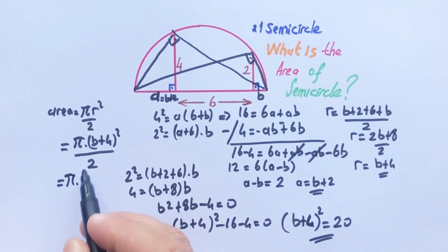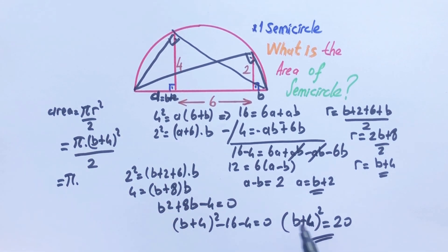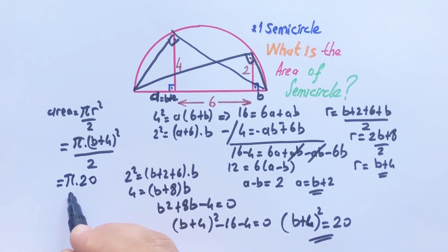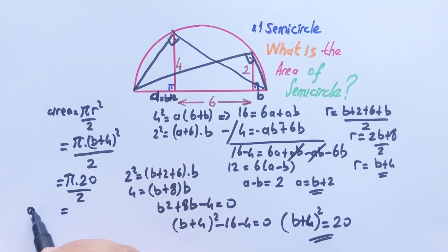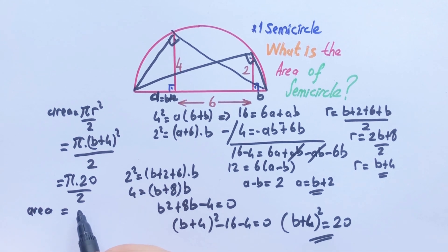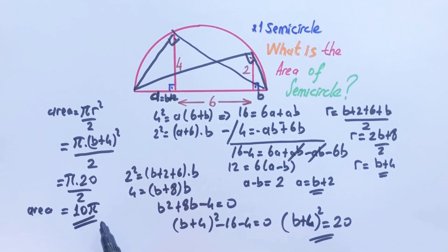So the area equals pi times (b plus 4) squared equals 20, over 2. So the area is going to be 10 pi units squared, since (b plus 4) squared equals 20.